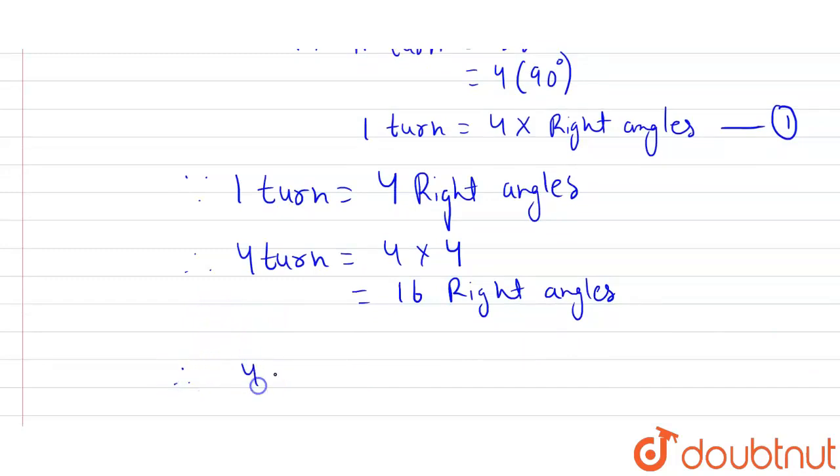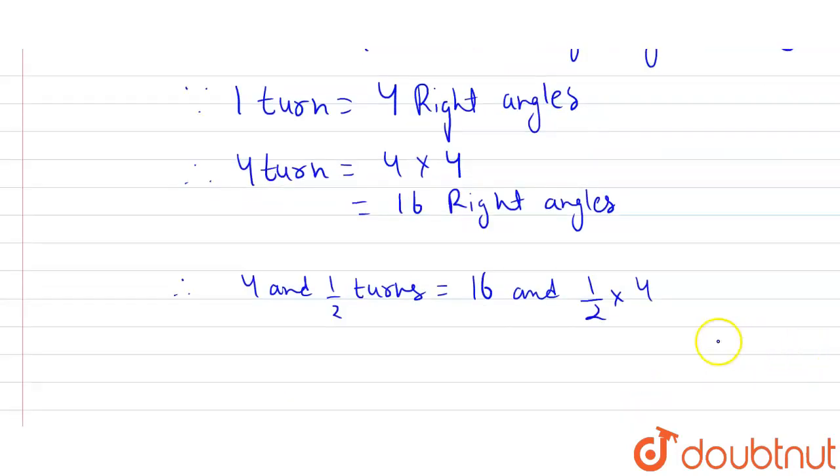Therefore, 4 and a half turns will be how many. Since 4 turns for 16 right angles and for half turns, it will be half into 4, since one turn is equal to 4 right angles. Therefore, it will be 16 and 2, 1 times 4, 2 times.